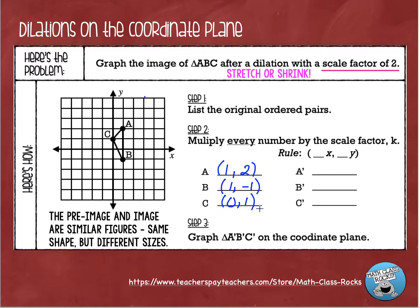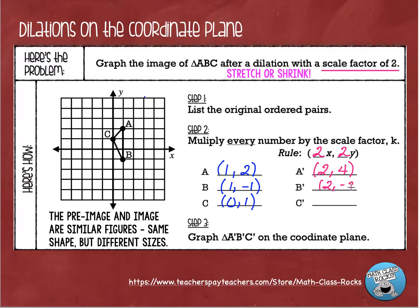Now I'm going to use the scale factor to dilate this figure. The scale factor, called K, is the number I'm going to multiply the x and y values by. Since our scale factor is 2, I'm going to multiply all of my x values by 2 and all of my y values by 2. So for point A: 1×2=2 and 2×2=4, giving new ordered pair (2, 4). For point B: 1×2=2 and -1×2=-2. And for point C: 0×2=0 and 1×2=2.